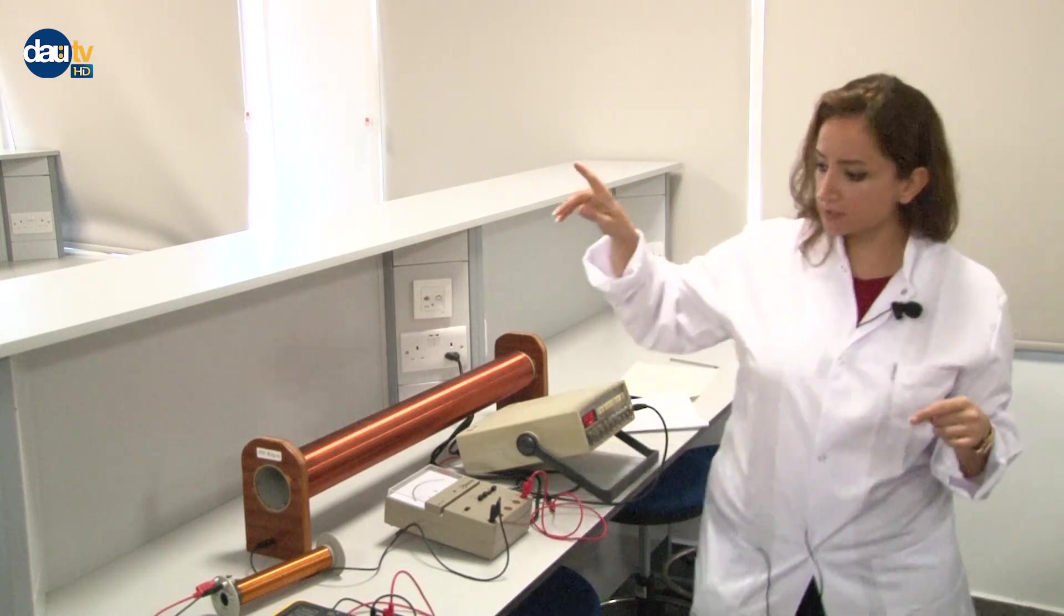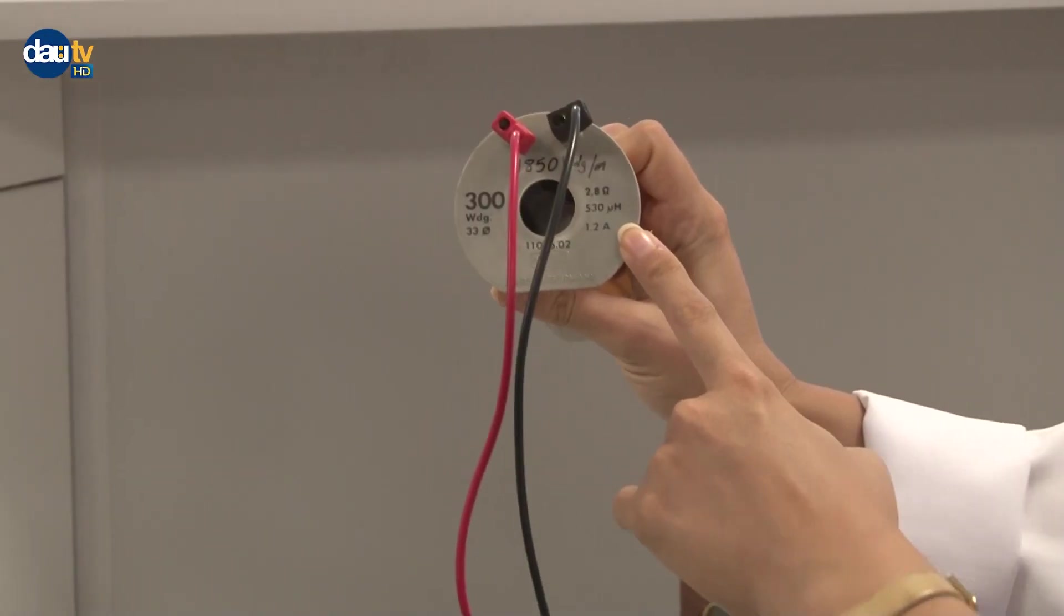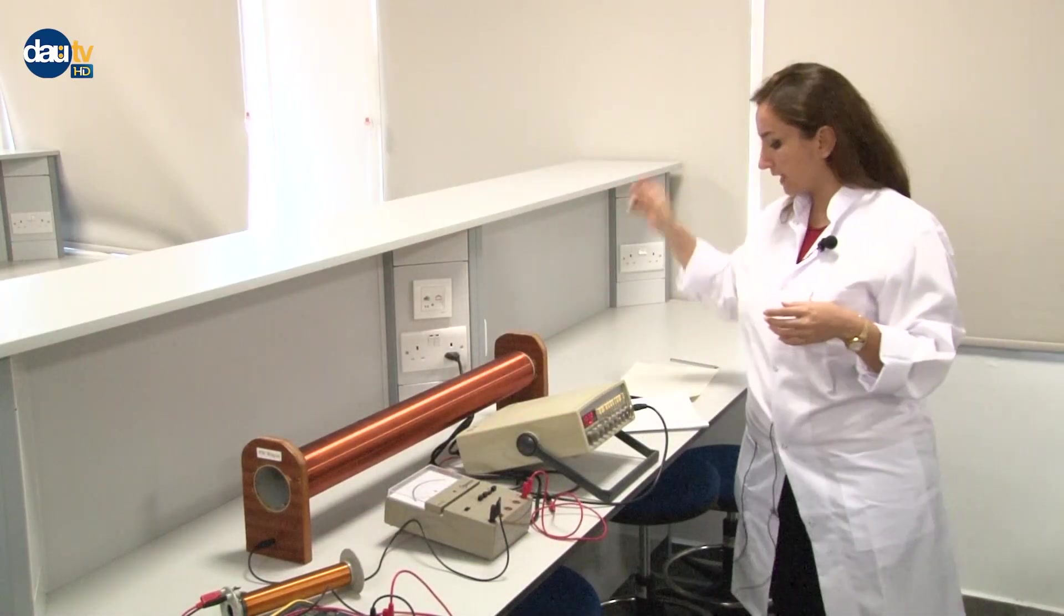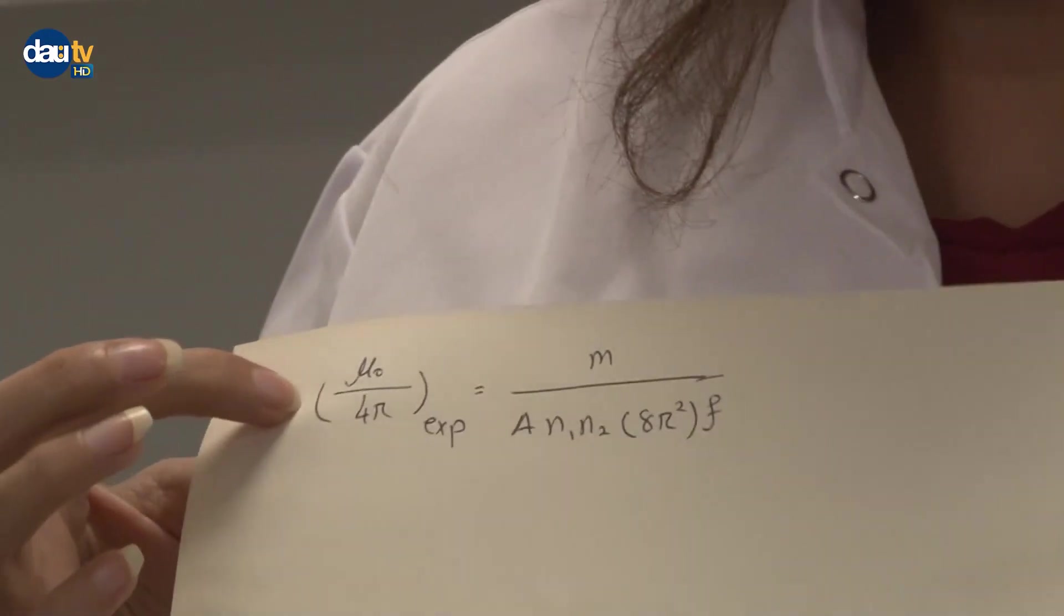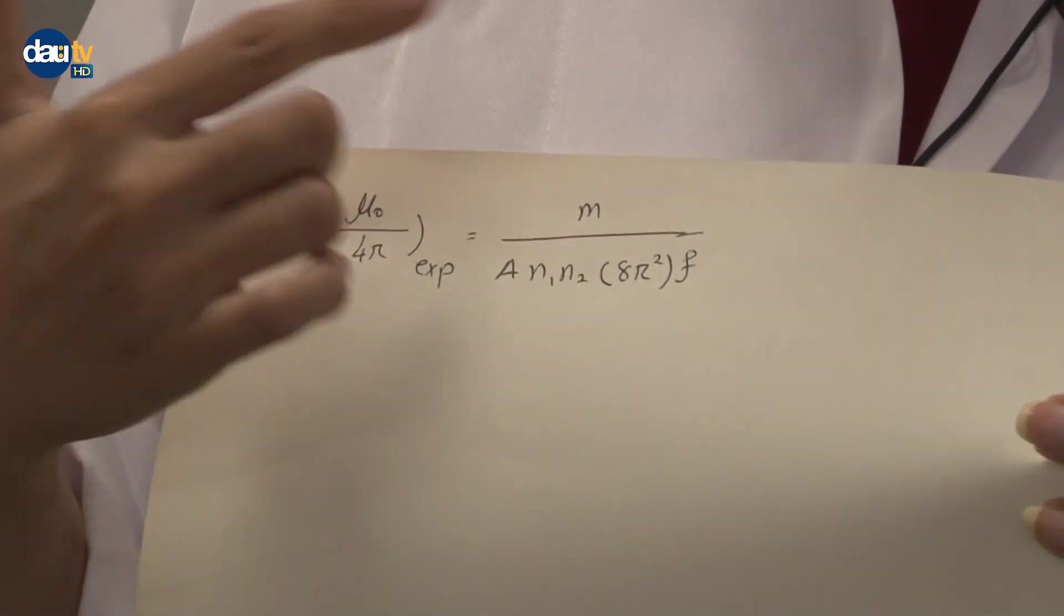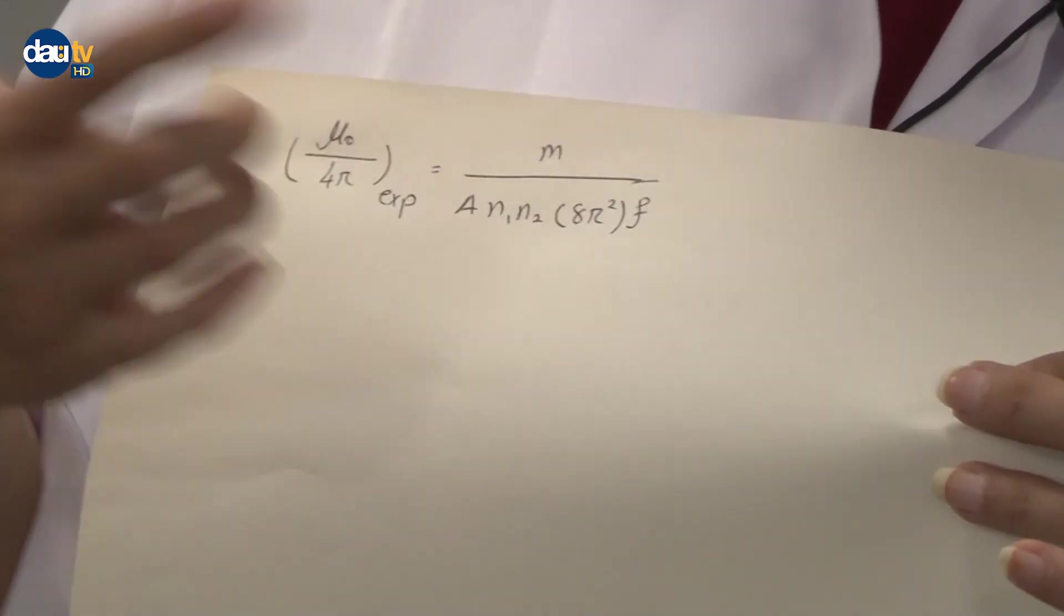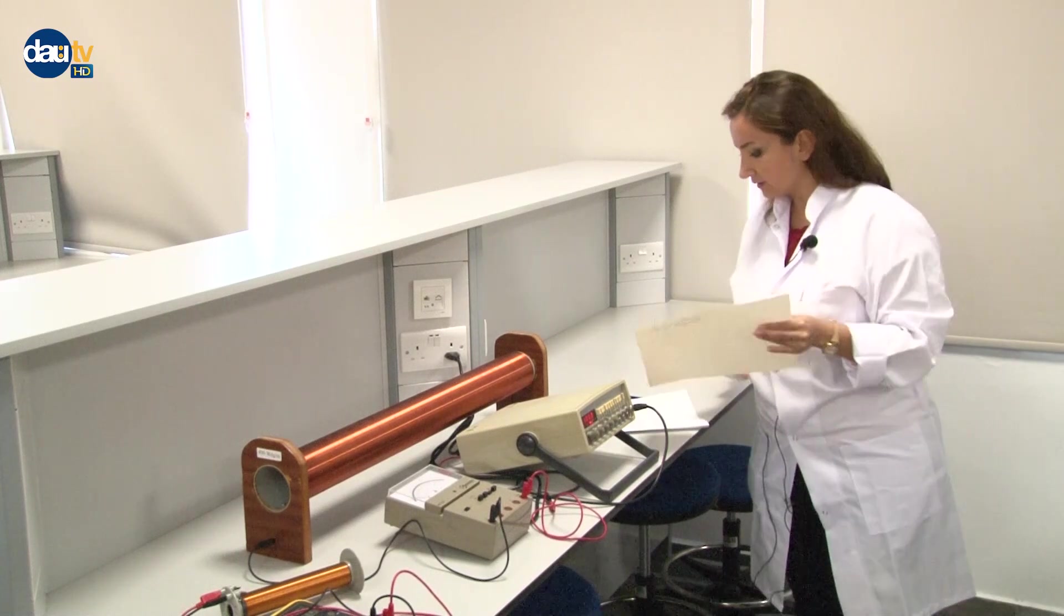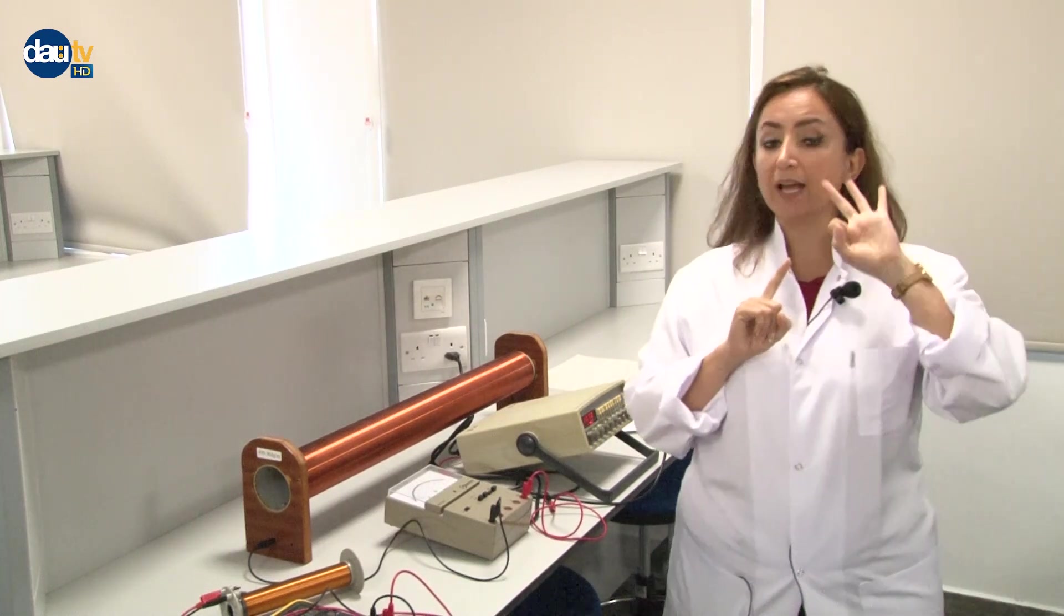There are some other points that I will explain. In these two solenoids, there are some numbers written on them, as you see in the smaller one and in the bigger one. As I've introduced and defined the equation for defining mu zero over 4 pi, m is a slope which we will define. But we need the other parameters in denominator: area, n1, n2, 8 pi square which is constant, and frequency. Frequency is given 10.7 times 10 to the power of minus 3. We need n1, n2 and area.